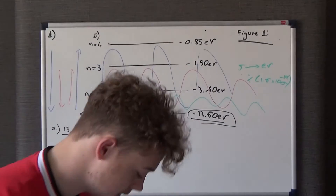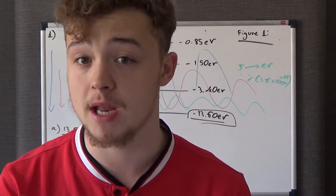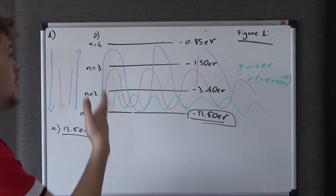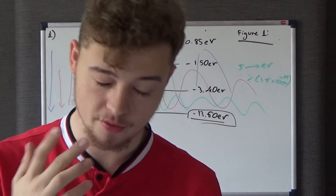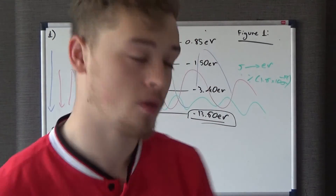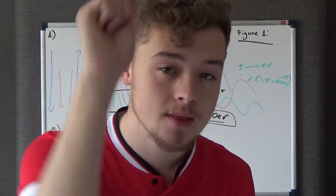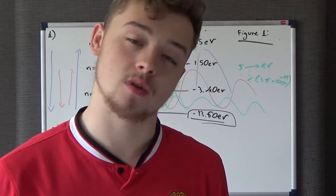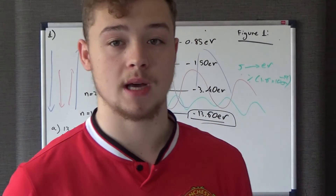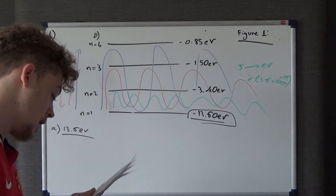For three photons to be emitted, the electron must go to three different energy states and return to n=1 each time. With only four energy states available, it must visit n=2, n=3, and n=4, each time de-exciting back to the ground state. The examiners could have made the question harder by including more energy states, but they kept it to four.